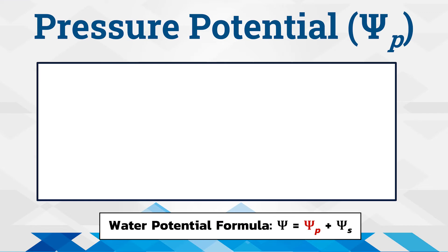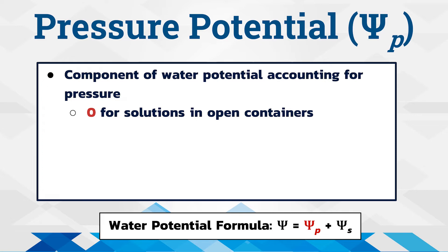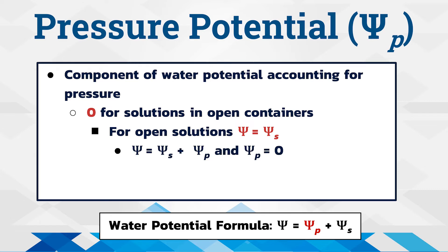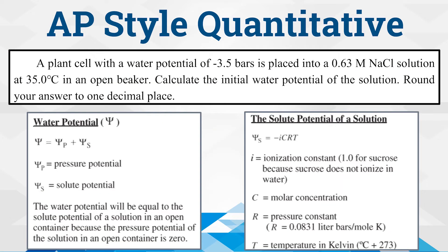Now on to the other component: pressure potential, which accounts for pressure's effect on water potential. It is always zero for solutions in open containers. This means that for solutions in open containers, water potential equals the solute potential, since pressure potential is zero. Pressure potential does exist in plant cells due to the cell wall as turgor pressure, which we'll begin to discuss in a moment. But first, let's try water potential calculation problems similar to the quantitative problems you may see on the AP test.